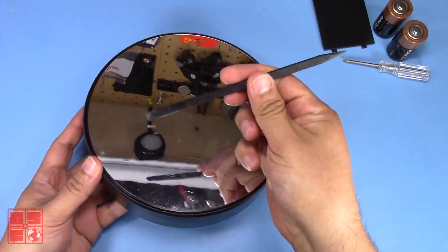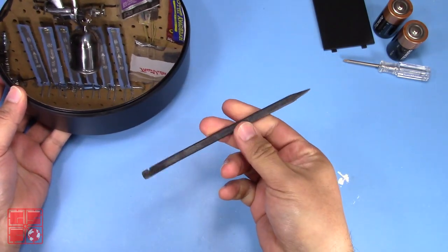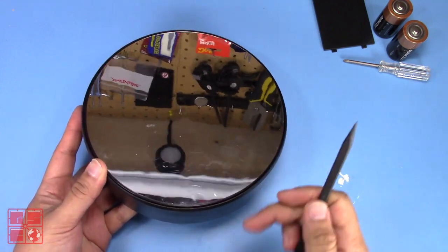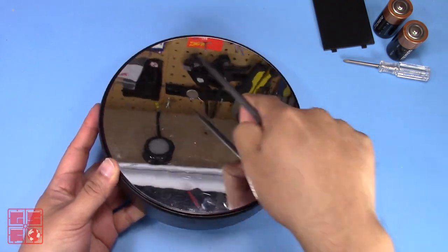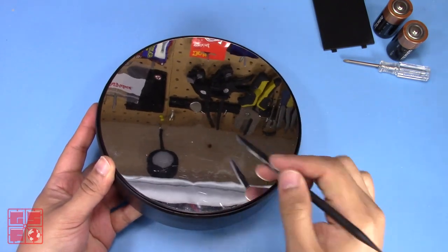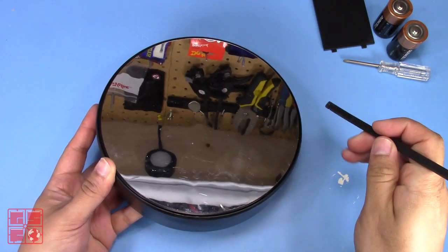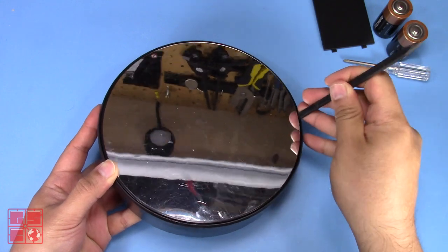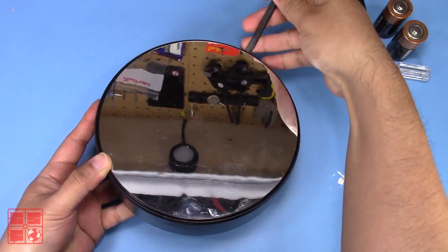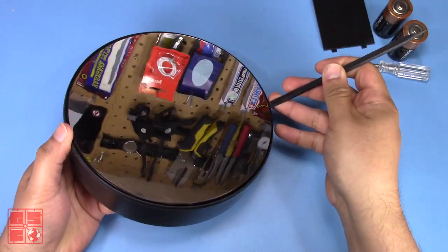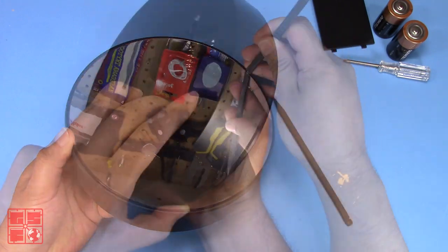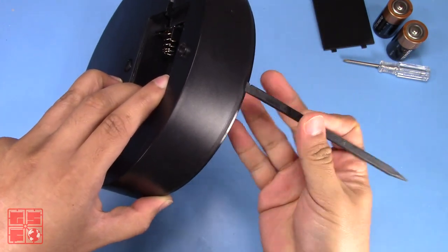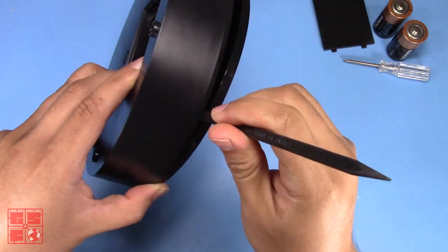Next, using a plastic spudger, I'm going to carefully pry around the rotating surface. The surface is held in the center by a single square peg. I carefully work my way around, taking my time as I don't want to break the rotating surface. After a while, it should free up and come right off.